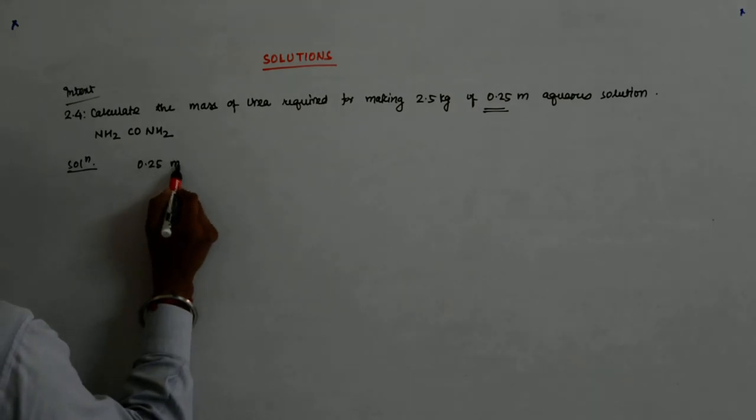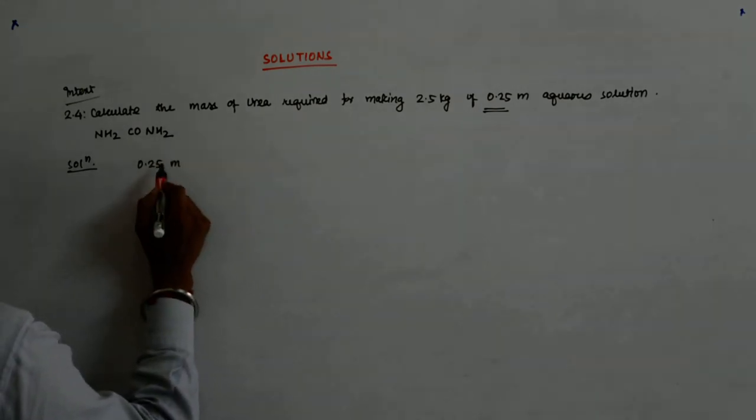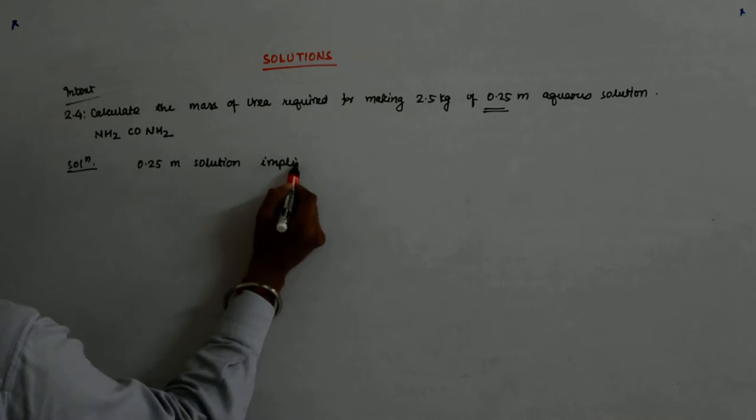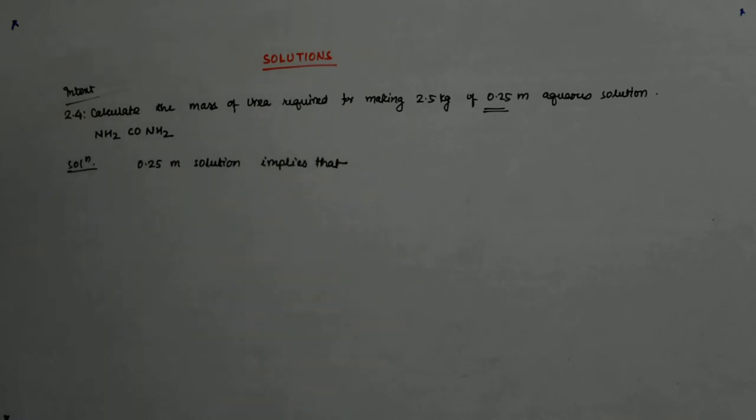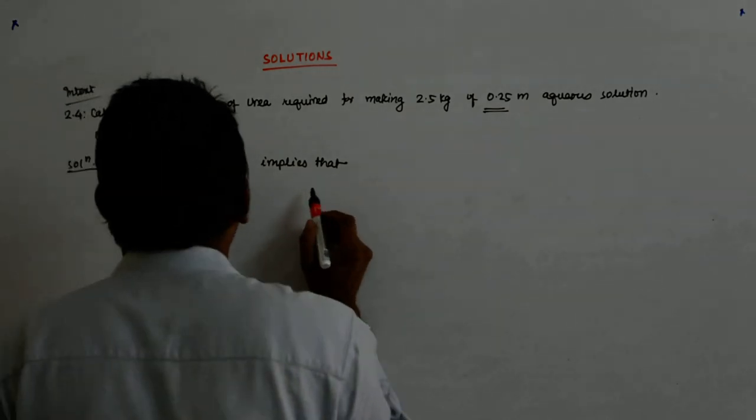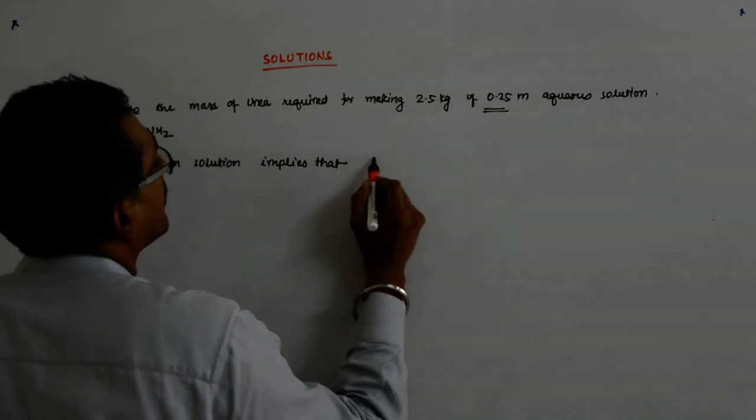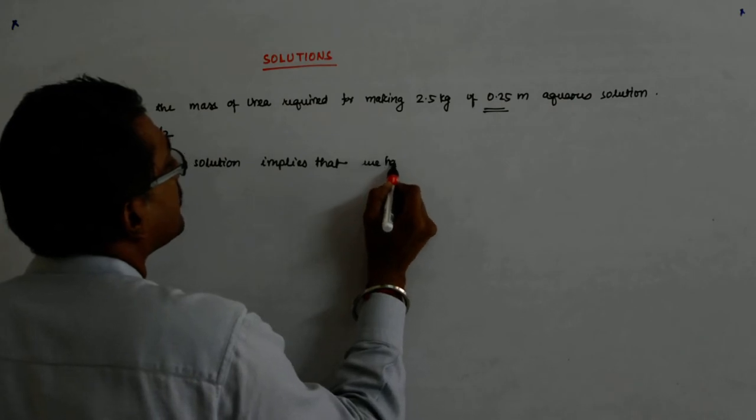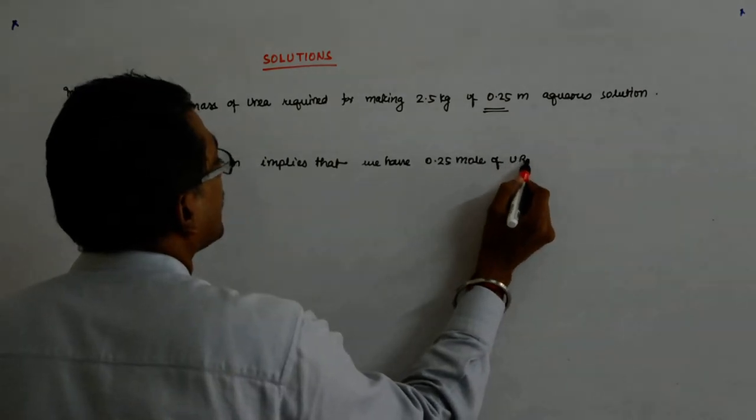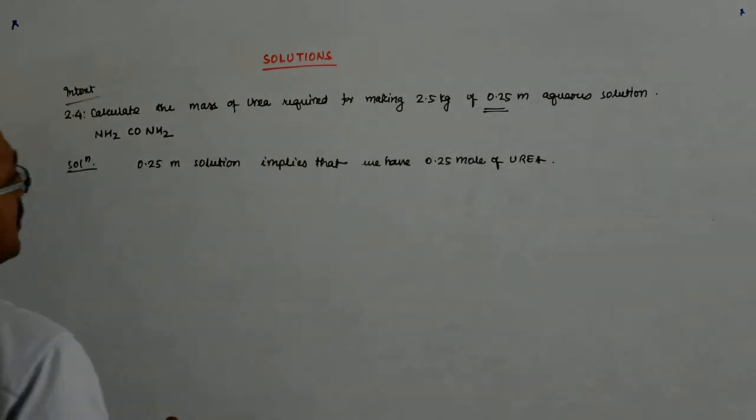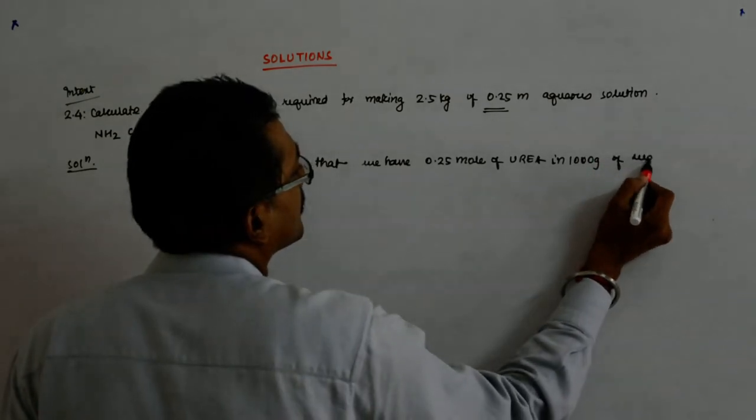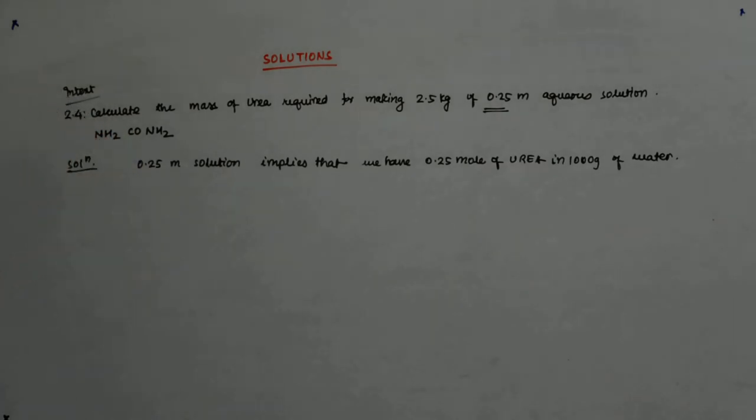0.25 molal solution implies that we have 0.25 moles of urea in 1000 grams of water. This is what it means.